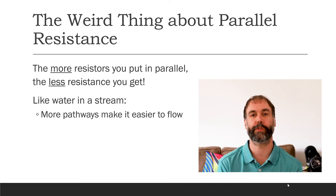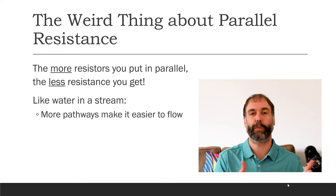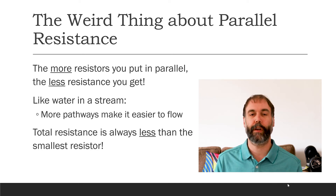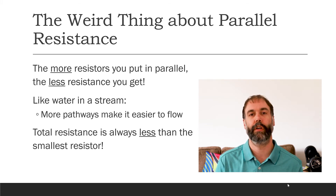The water is going to have an easier time flowing because it has two pathways that it can take — it doesn't all have to go through the same spot. That's the way that parallel circuits work. When you put elements in parallel, you give electricity multiple paths that it can take, so it's easier for the electricity to flow. In fact, in a parallel circuit, the equivalent resistance of the whole circuit will always be less than the smallest resistor in that circuit.